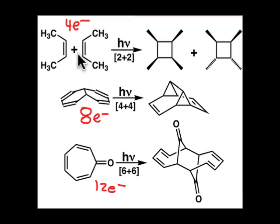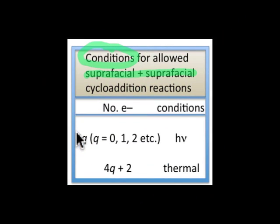These numbers are all multiples of 4, where 4q is going to either be 4, 8, or 12. And each of those reactions are photochemically allowed.